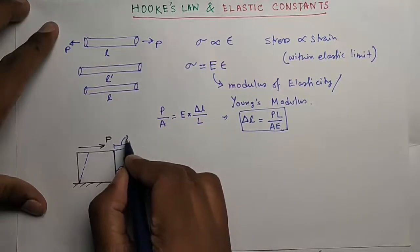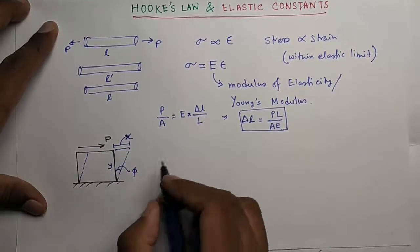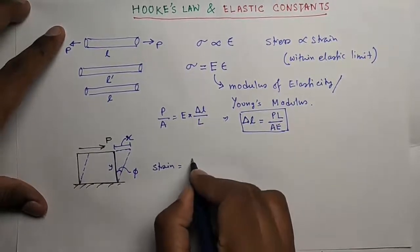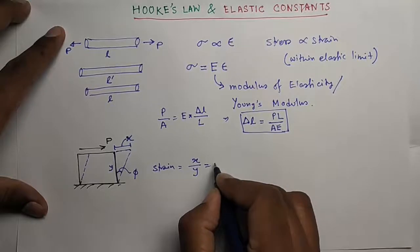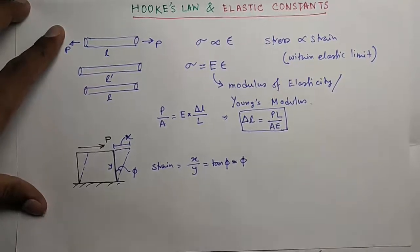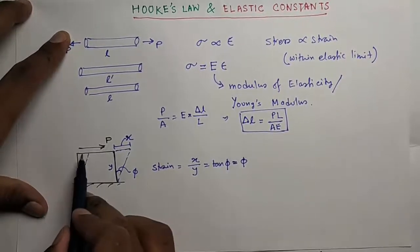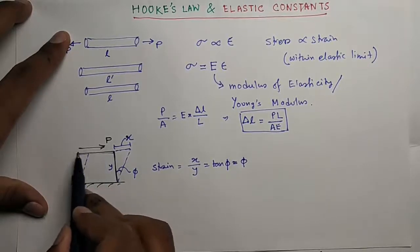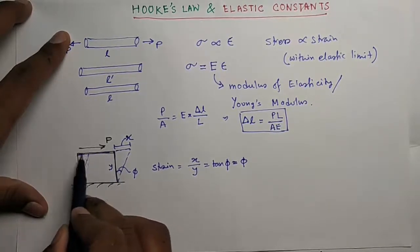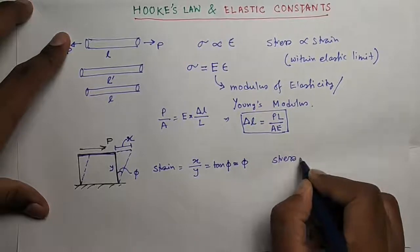Say this length is X and this length is Y. So the shear strain equals to X by Y, which is tan phi. As phi is very small, it can be written as phi. And the shear stress, force P by unit area of this plane, is written as tau.